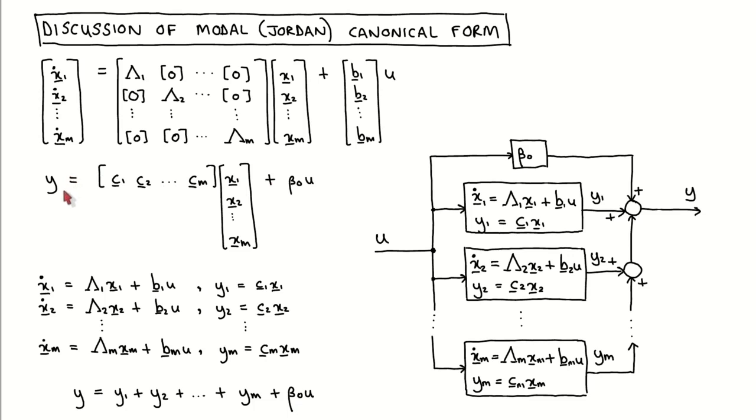We can draw the system as shown here. For the first subsystem, the dynamics are only determined by its state and input, and its output is only determined by its state.